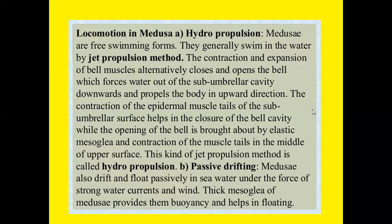Locomotion in the medusa — hydropropulsion: medusae are free-swimming forms. They generally swim in the water by jet propulsion. The contraction and expansion of bell muscles alternately closes and opens the bell, which forces water out of the subumbrella cavity downward, propelling the body upward. The contraction of epidermal muscle tails helps in closure of the bell cavity, while opening of the bell is brought about by elastic mesoglea and contractions of muscle scales. This method is also called hydropropulsion. When not swimming, medusae also drift and float passively in seawater under the force of strong water currents and wind.